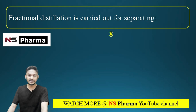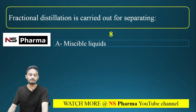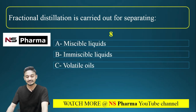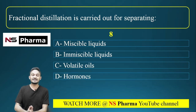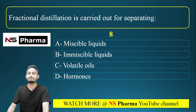Question 8: Fractional distillation is carried out for separating — options: (a) miscible liquids, (b) immiscible liquids, (c) volatile oils, (d) hormones. The correct answer is option A: miscible liquids.